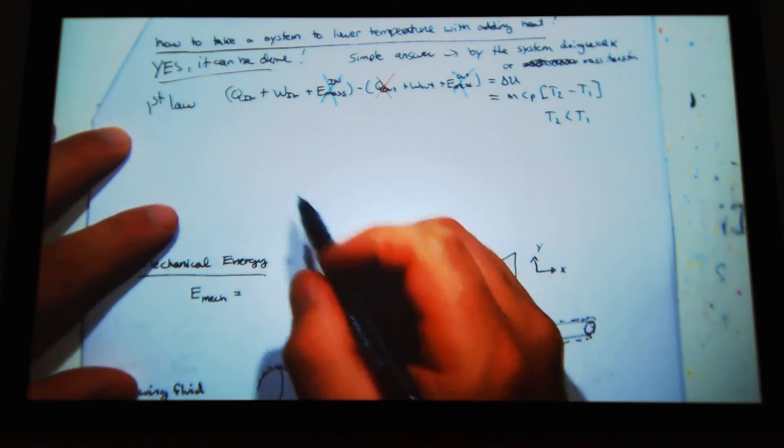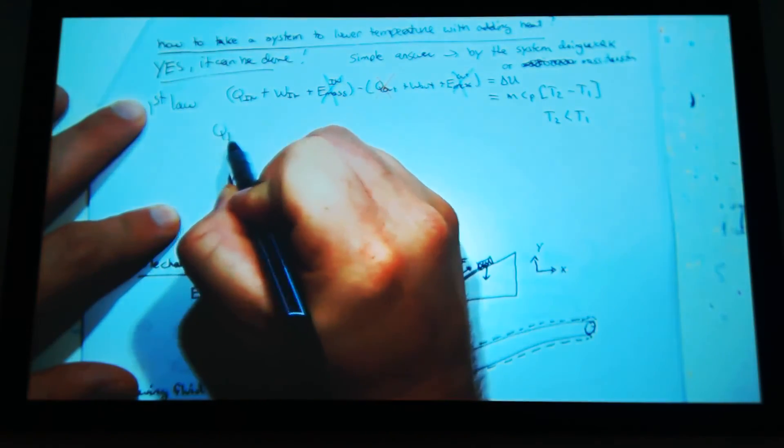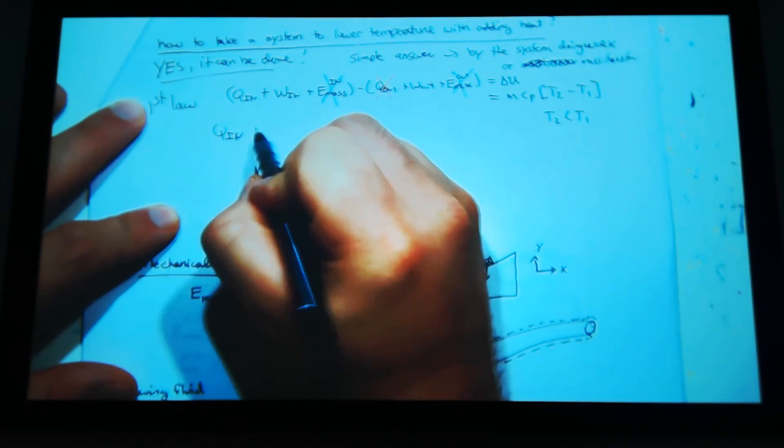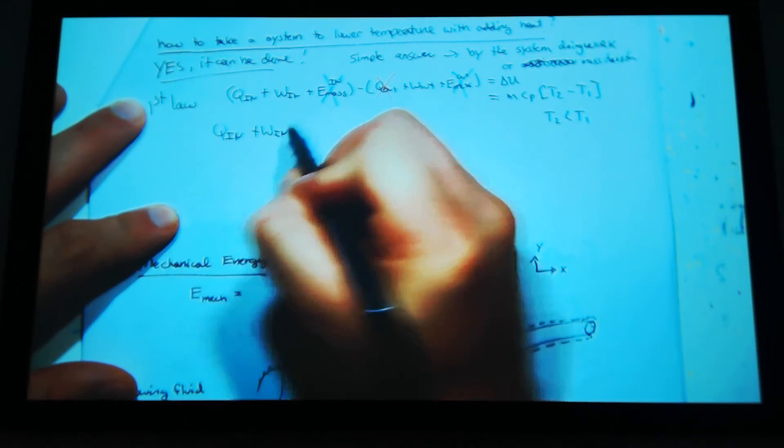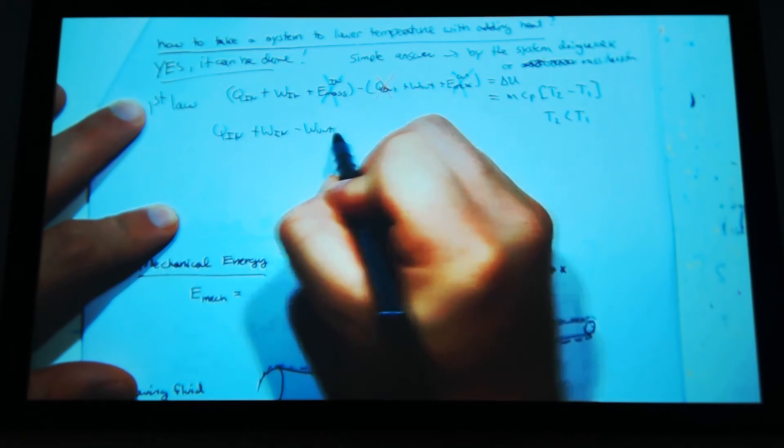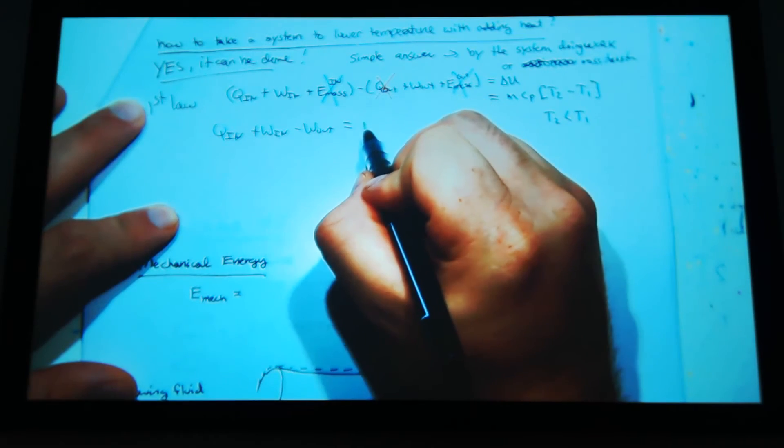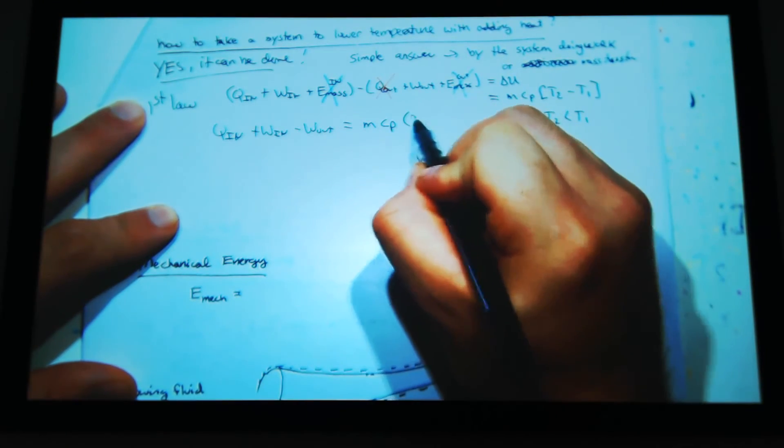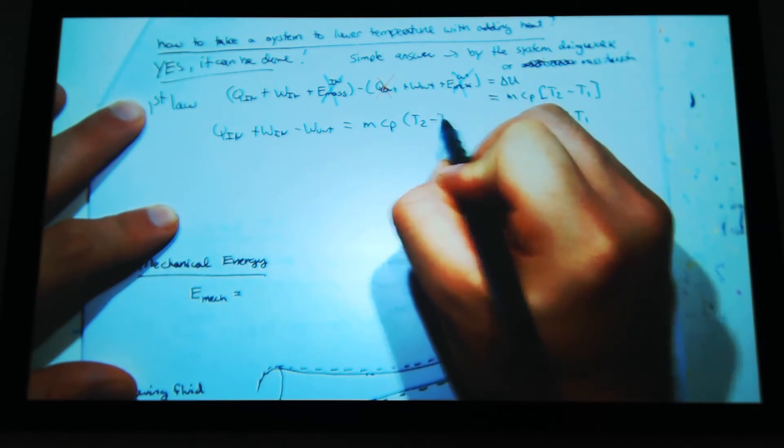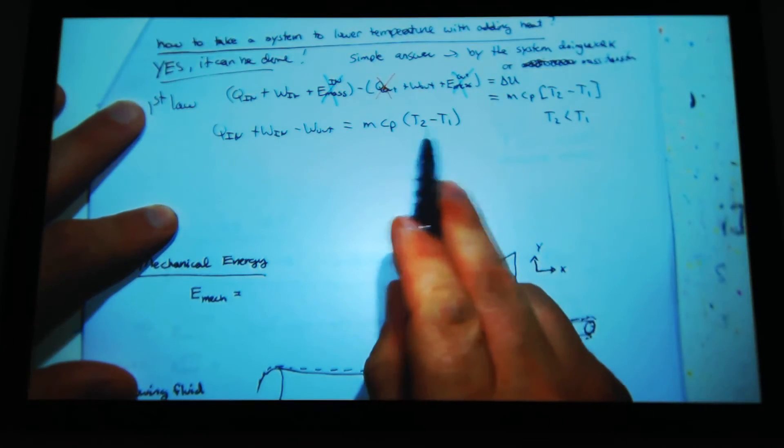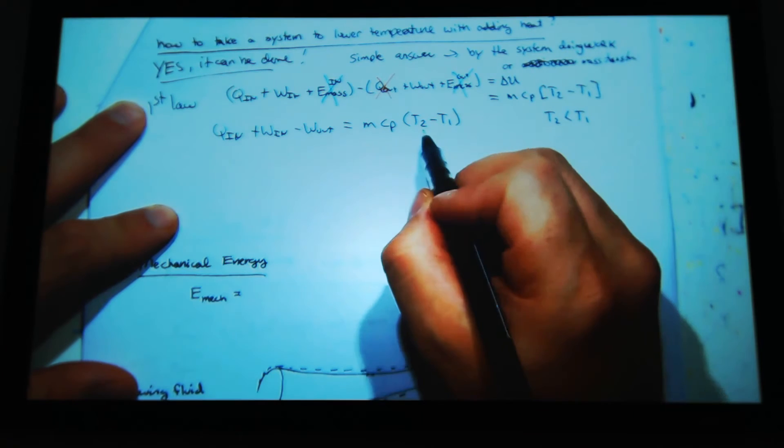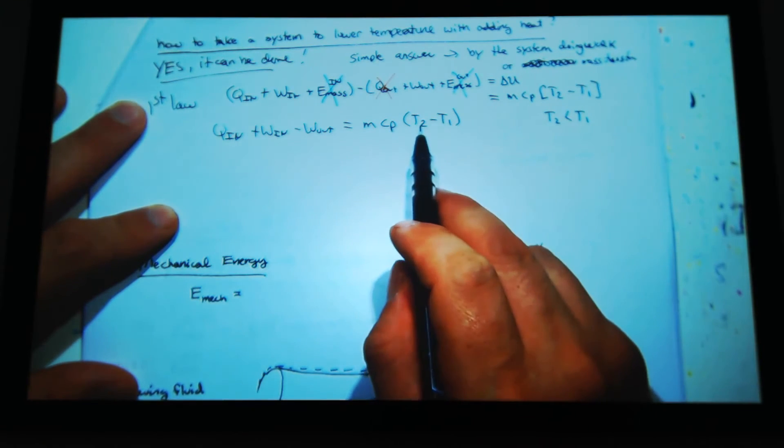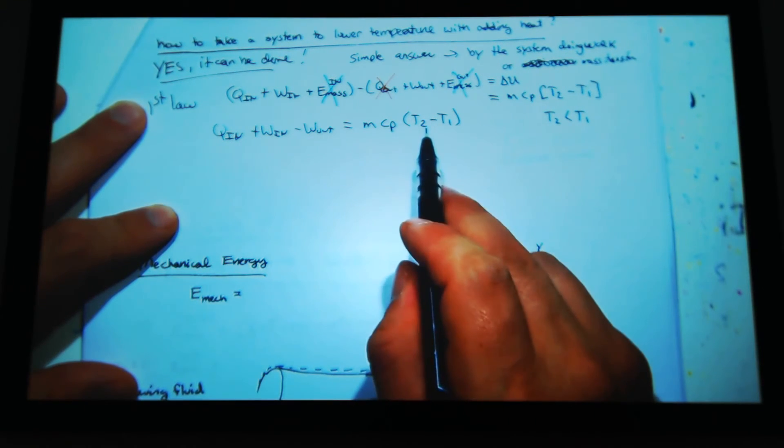So then I have Q in, I'm adding heat, plus work in minus work out equals M CP T2 minus T1. Okay, this is less than that, so this ends up being negative.